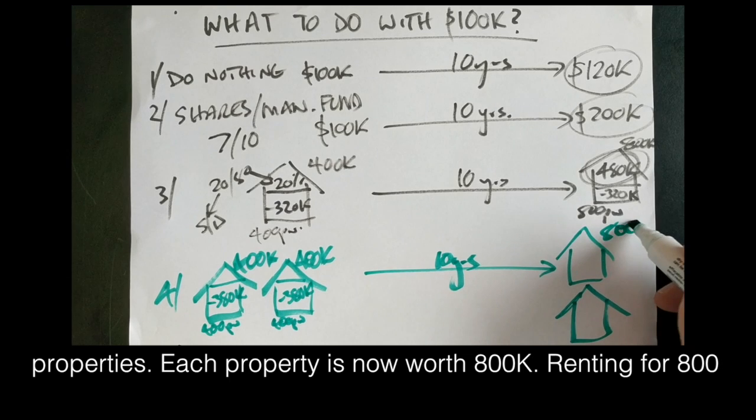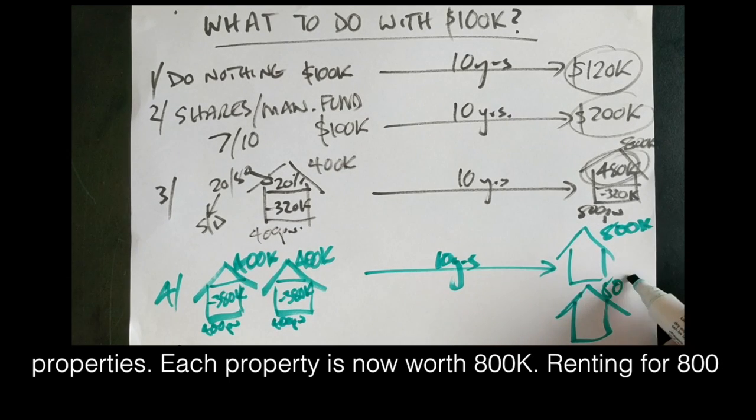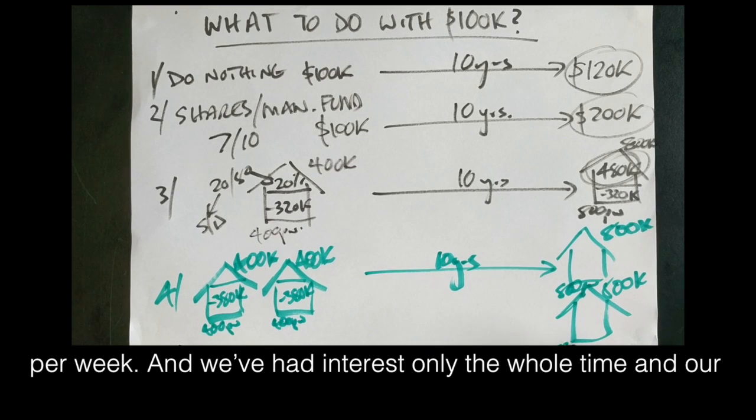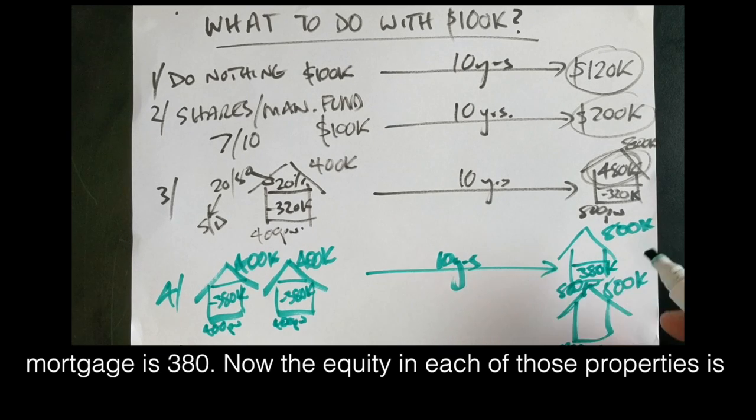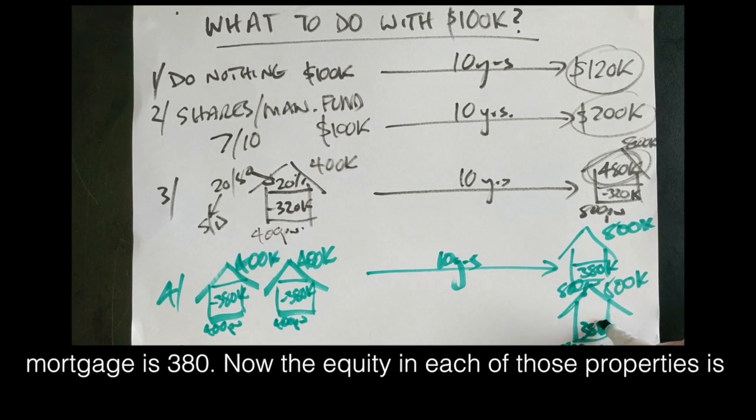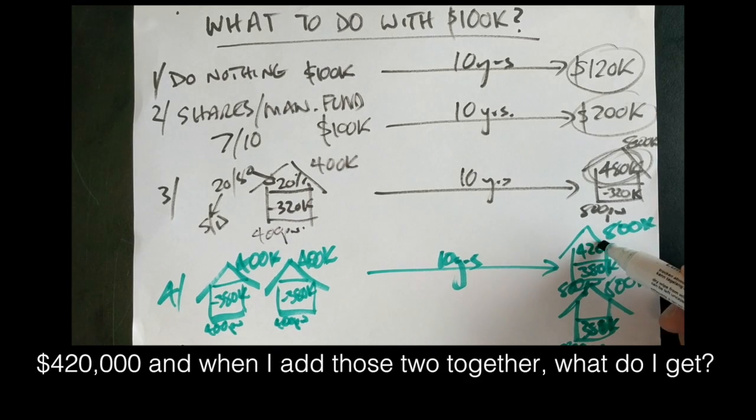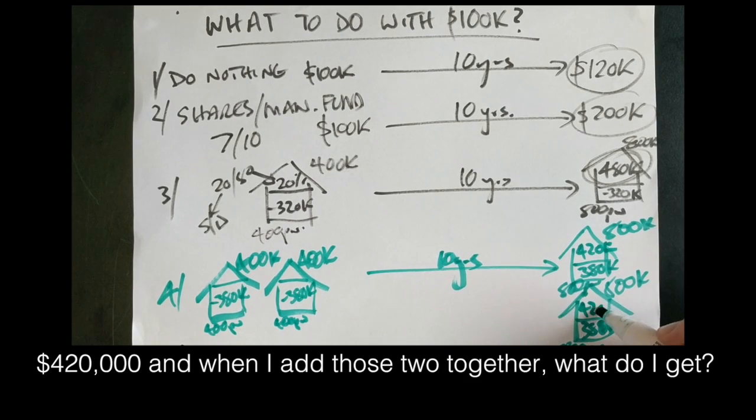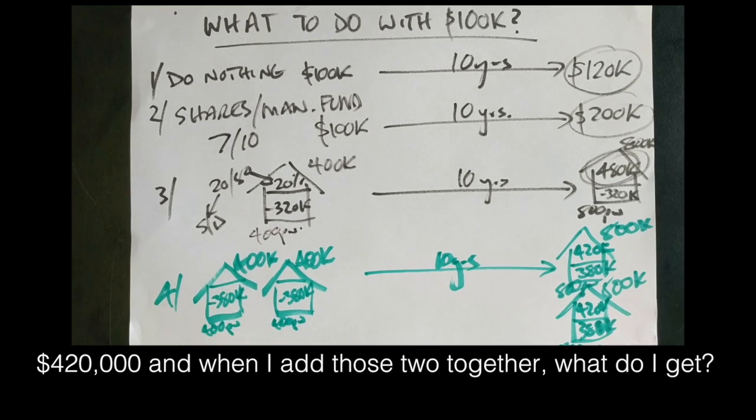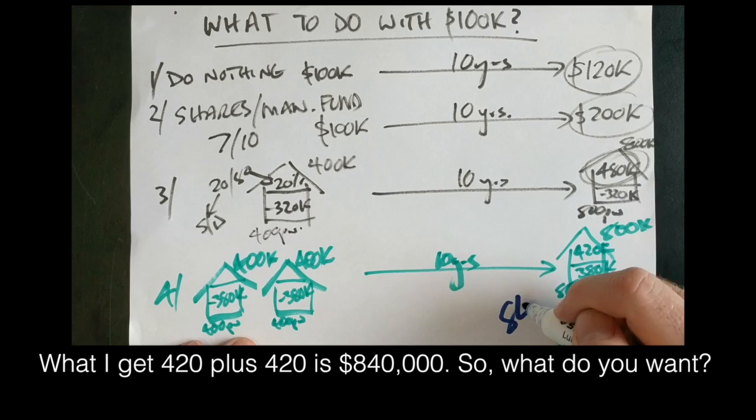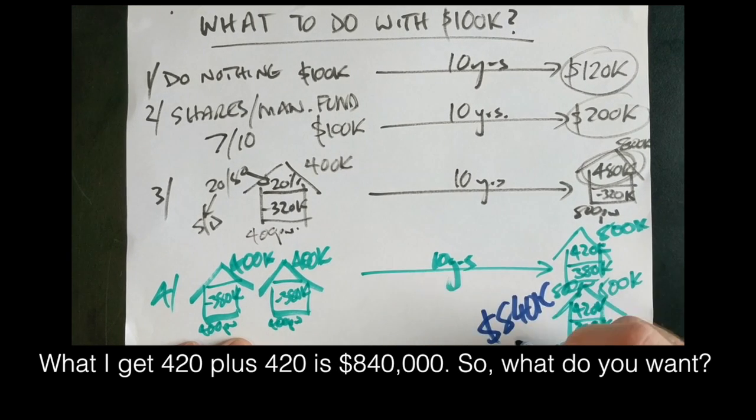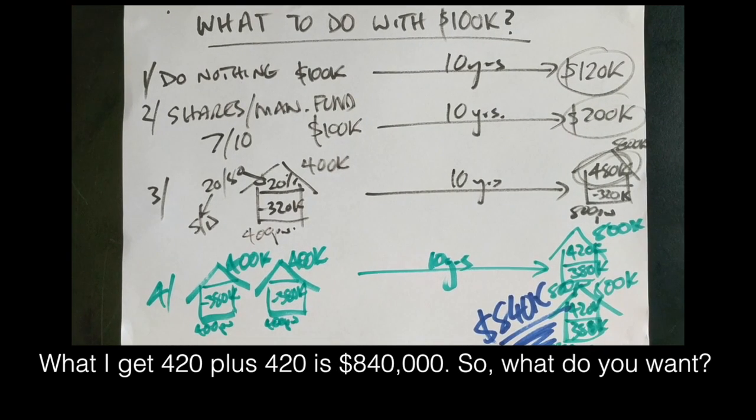Each property is now worth $800,000, renting for $800 per week, and we've had interest only the whole time, and our mortgage is $380,000. The equity in each of those properties is $420,000. And when I add those two together, what do I get? What I get is $420,000 plus $420,000, which equals $840,000.